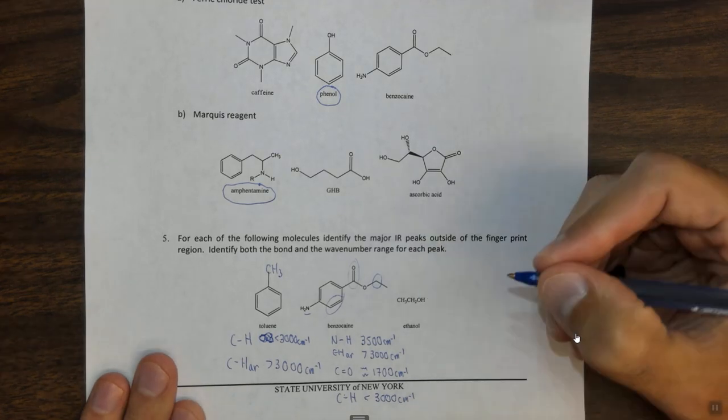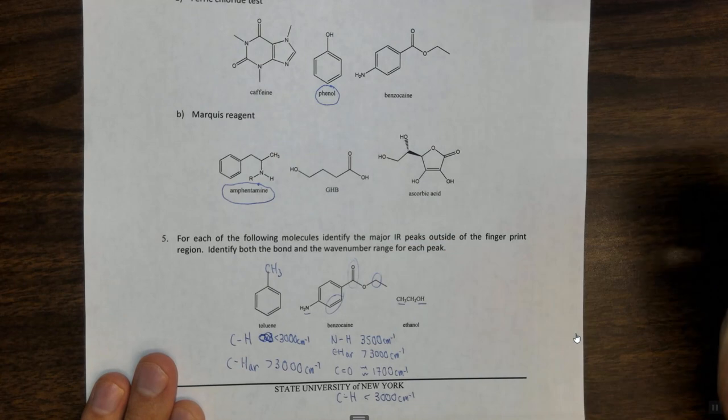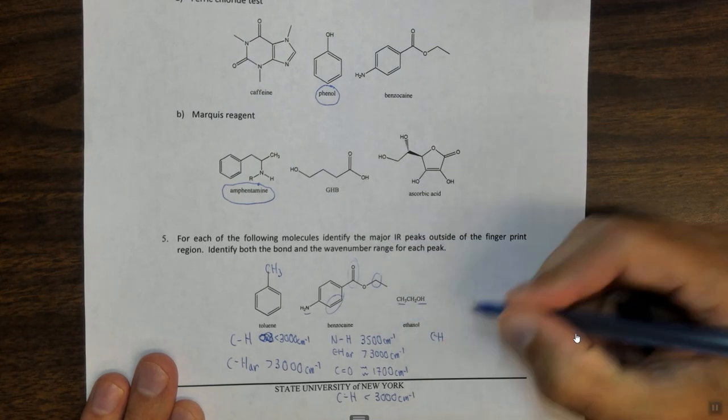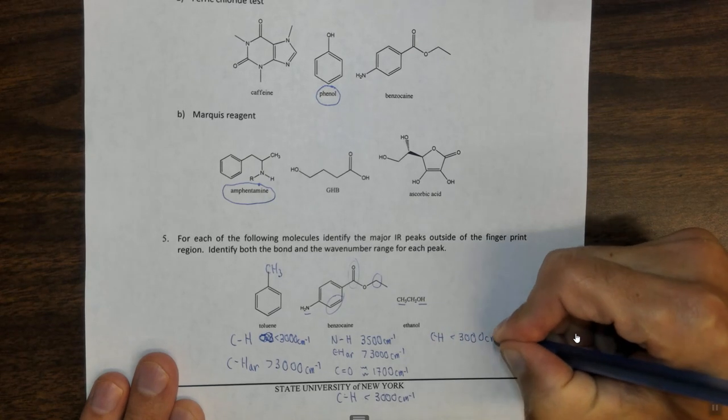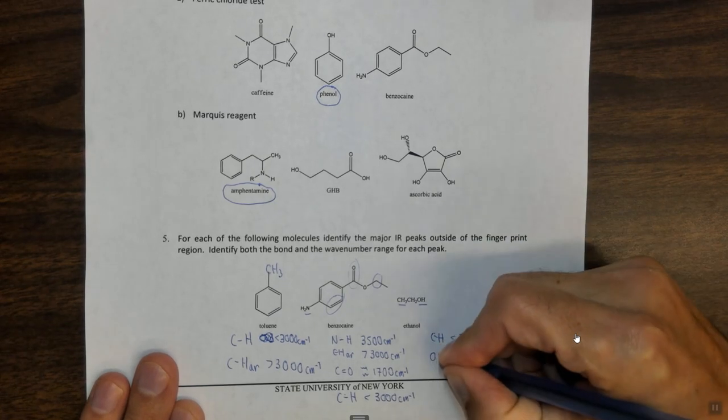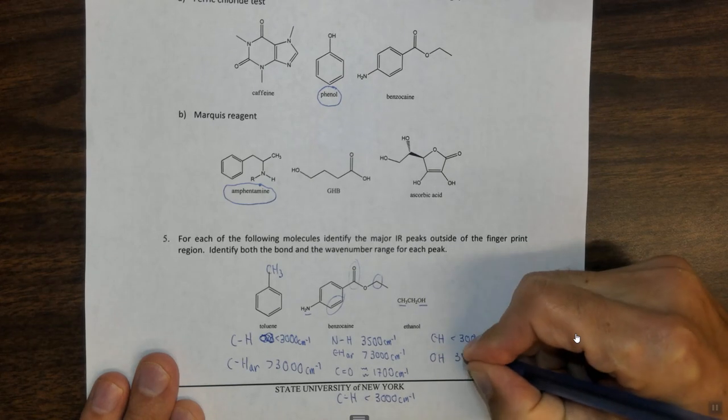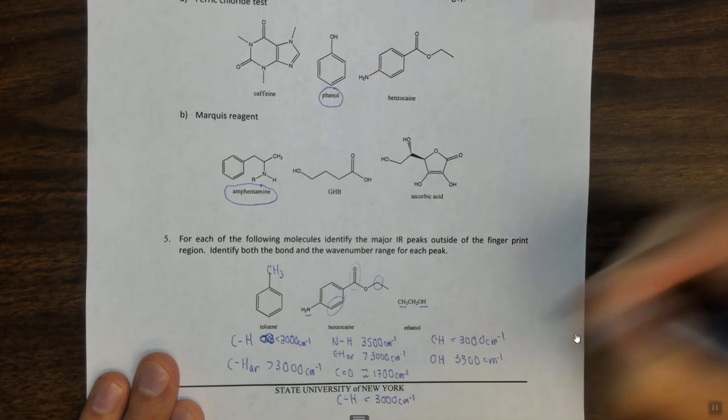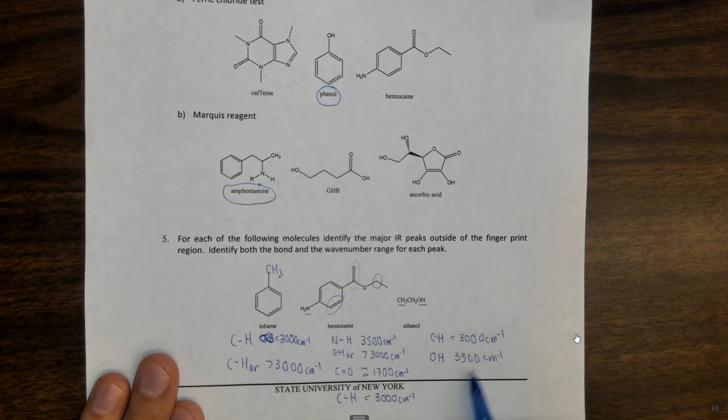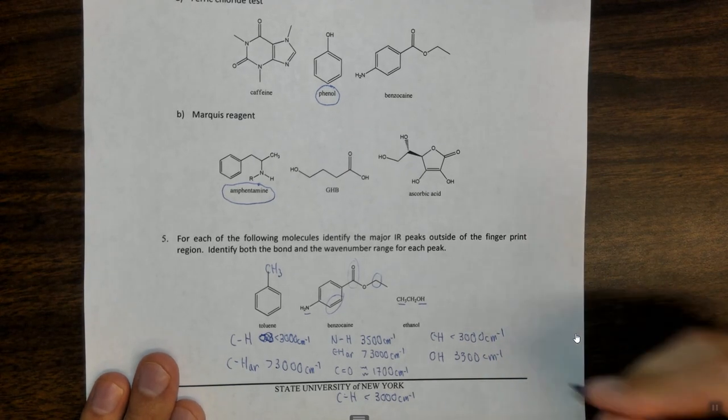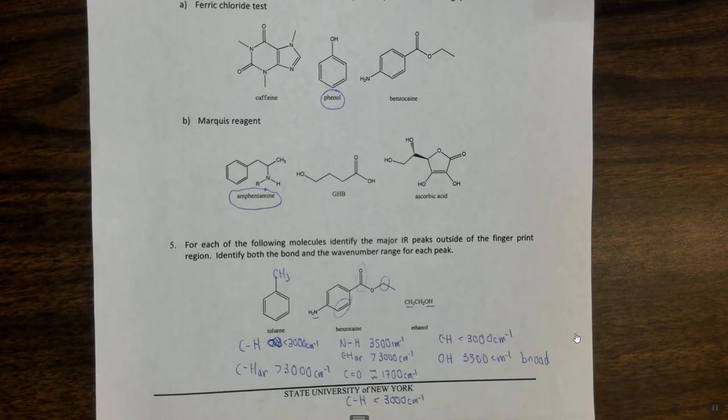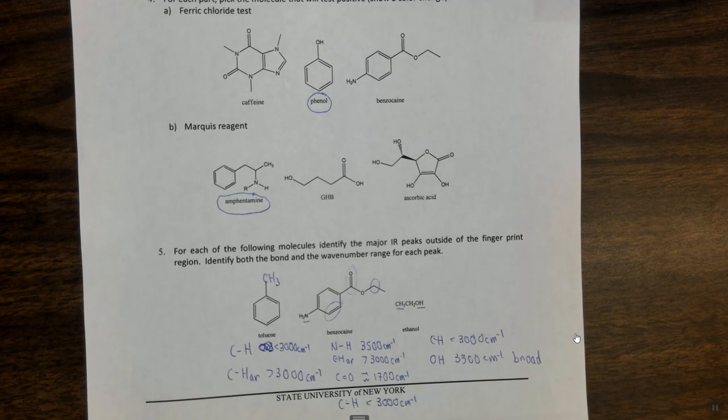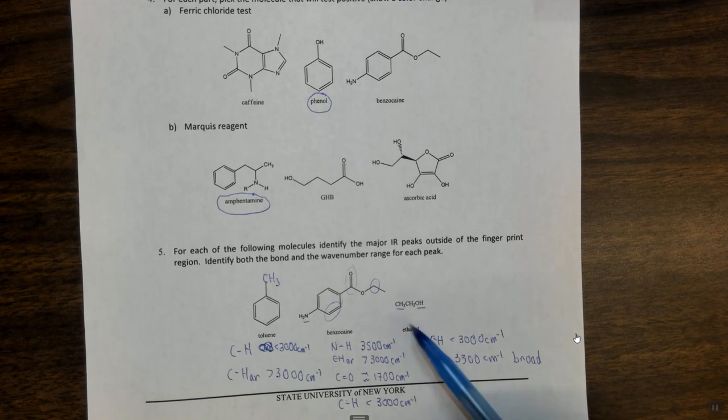Last one, ethanol. Well ethanol, we have the OH and we have the CH. So the CH, it's not aromatic here because it's not in a ring, is going to be less than 3,000 centimeters to the minus one. And the OH is somewhere around 3,300 centimeters to the minus one, but one thing about the OH that's very indicative of OH is that the peak tends to be very broad.